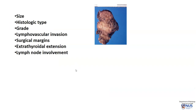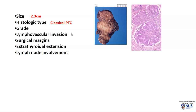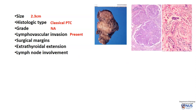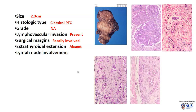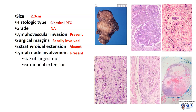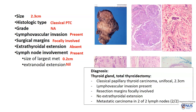So just to summarize all the prognostic factors: the size is 2.3 cm, the histologic type is classical PTC, grading is not applicable in this instance, there is lymphovascular invasion, the surgical margins are focally involved, there is no evidence of extra-thyroidal extension, and there is lymph node involvement in two out of two perithyroidal lymph nodes. The largest lymph node metastasis is 0.2 centimeters in size.